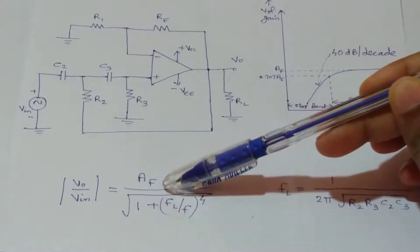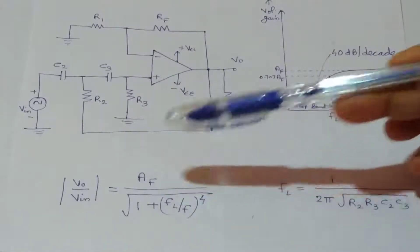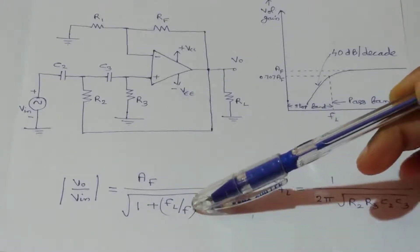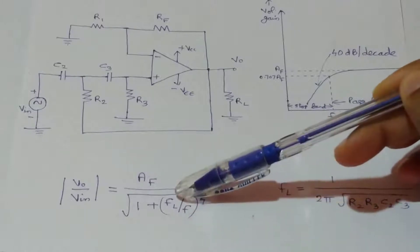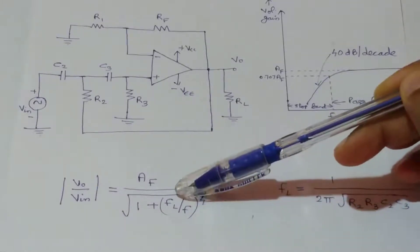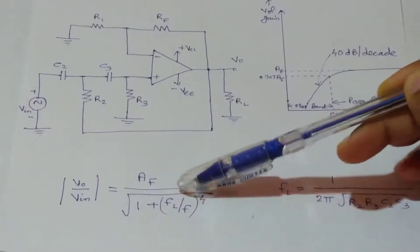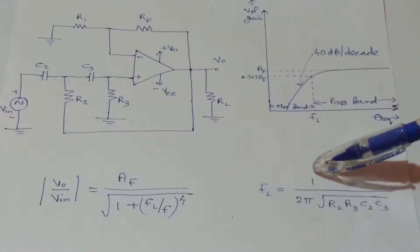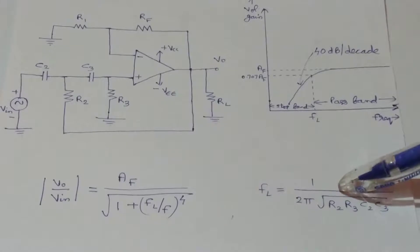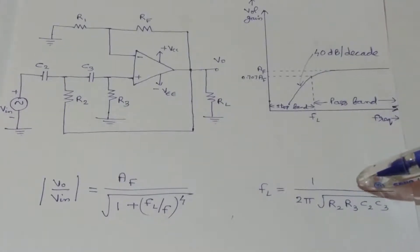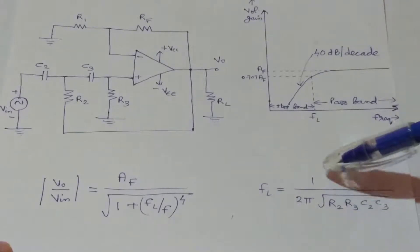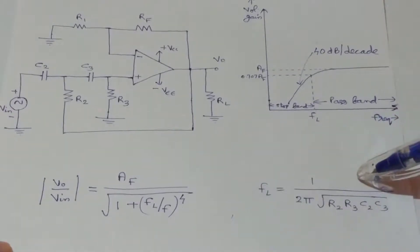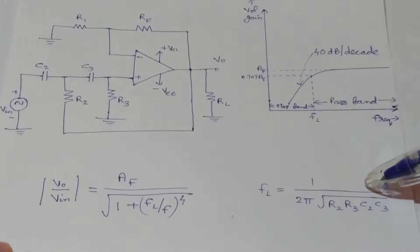The link for that video is provided in the description. F is the frequency of the input signal in Hertz, and FL is the lower cutoff frequency in Hertz. The lower cutoff frequency FL is given by 1 divided by 2π times the square root of R2·R3·C2·C3. This equation is the same as the cutoff frequency equation of the second-order low-pass Butterworth filter.